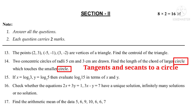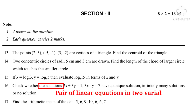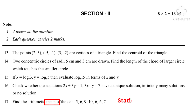Question 15: If X = log₂3, Y = log₂5, then evaluate log₂15 in terms of X and Y — from the chapter Real Numbers. Question 16: Check whether the equations 2X + 3Y = 1 and 3X − Y = 7 have a unique solution, infinitely many solutions, or no solution — from Pair of Linear Equations in Two Variables. Question 17: Find the arithmetic mean of the data 5, 6, 9, 10, 6, 6, 7 — from Statistics.